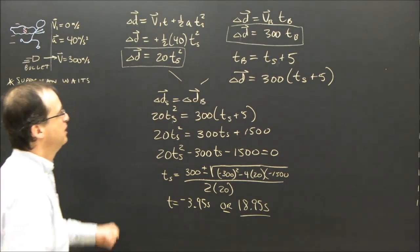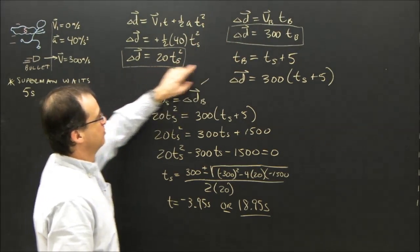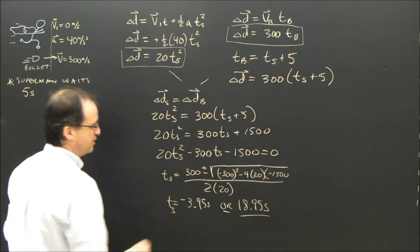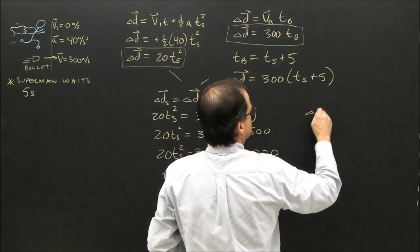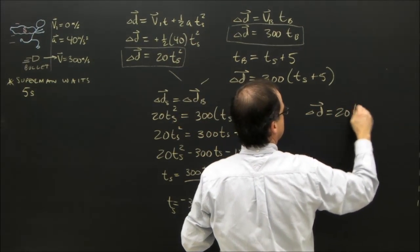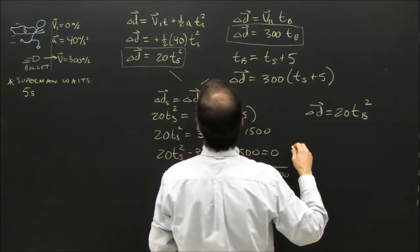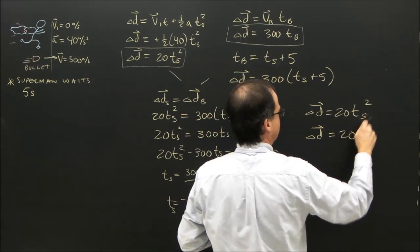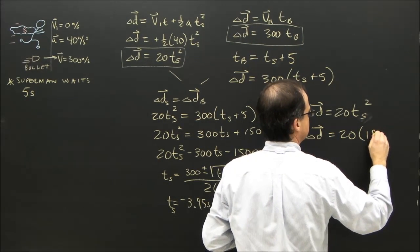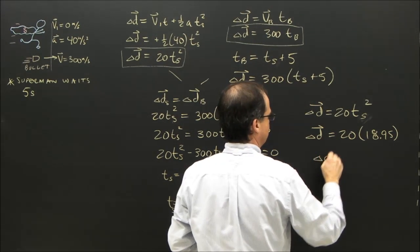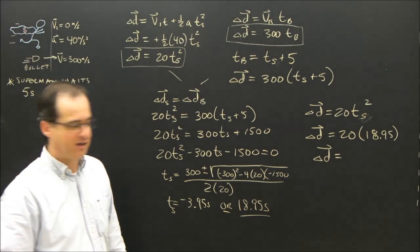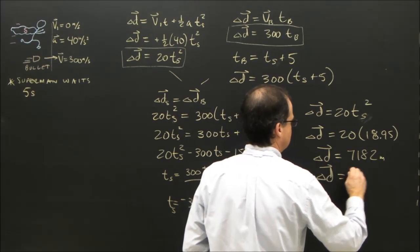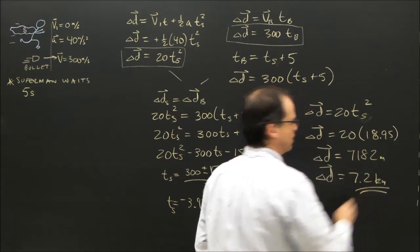So where are they at that time? I can plug into this one or this one. But this one, I've got the bullet, so I've got to use this to find that. So this is easier. I have the time of Superman. So let's plug it in. The position of Superman is 20TB squared. So it's 20 times 18.95. Where do they meet? They meet at 7182 meters. We round that off to 7.2 kilometers.